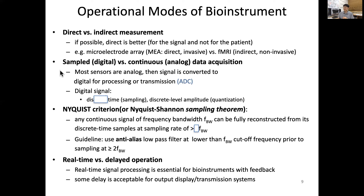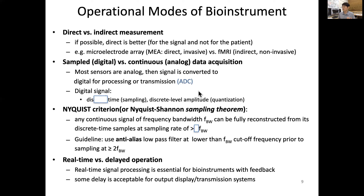The majority of signals are in fact continuous and therefore analog by nature. However, most of our processing is done by computer, which means it is digital. We have to sample the signal in terms of time and in terms of the level or quantity of the signal. So data acquisition can be divided as sampling versus continuous, or digital versus analog. While most sensors are analog, the signal must be converted to digital for processing or transmission — this is called ADC, or analog-to-digital conversion.